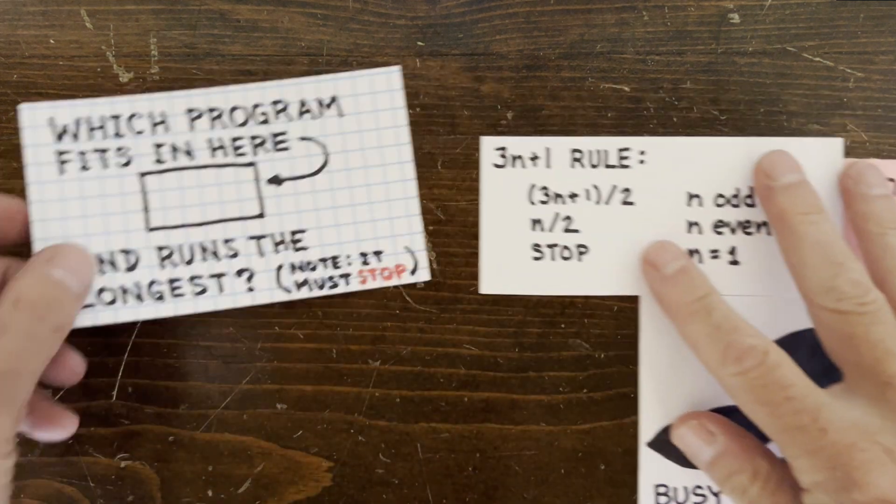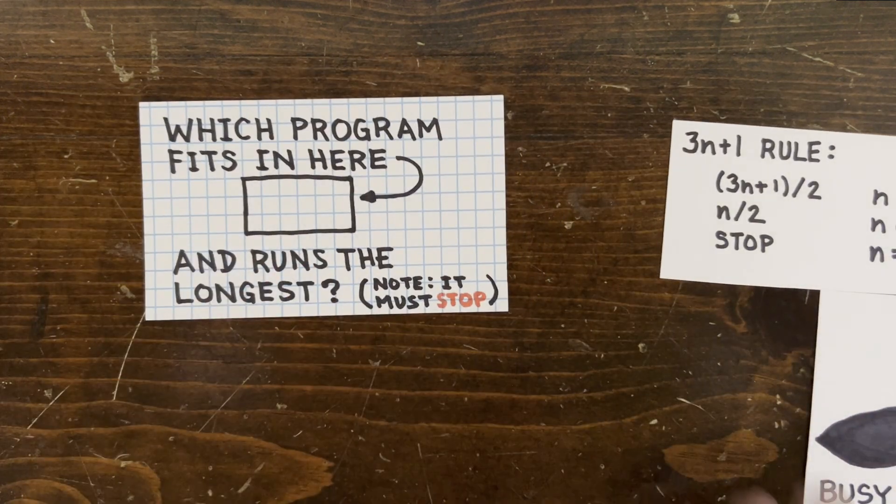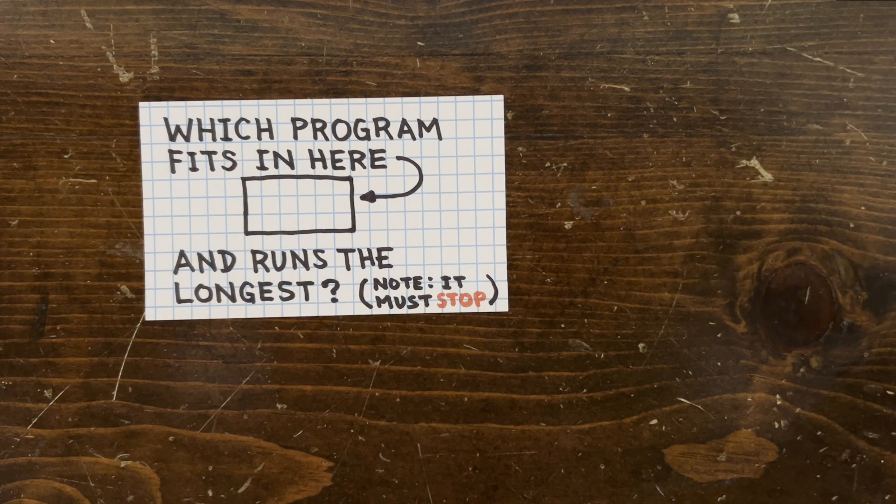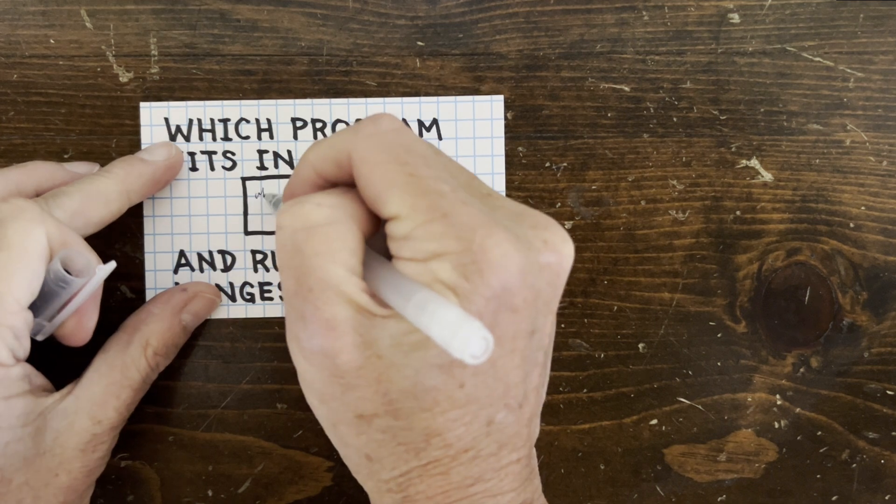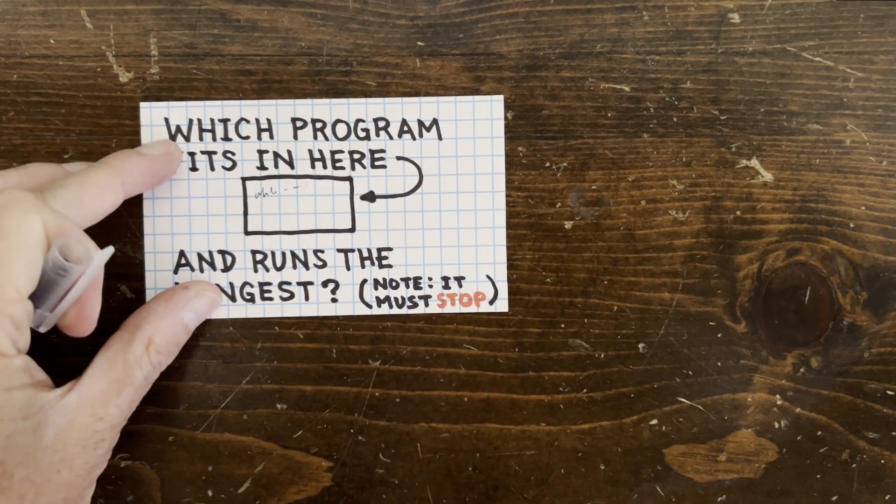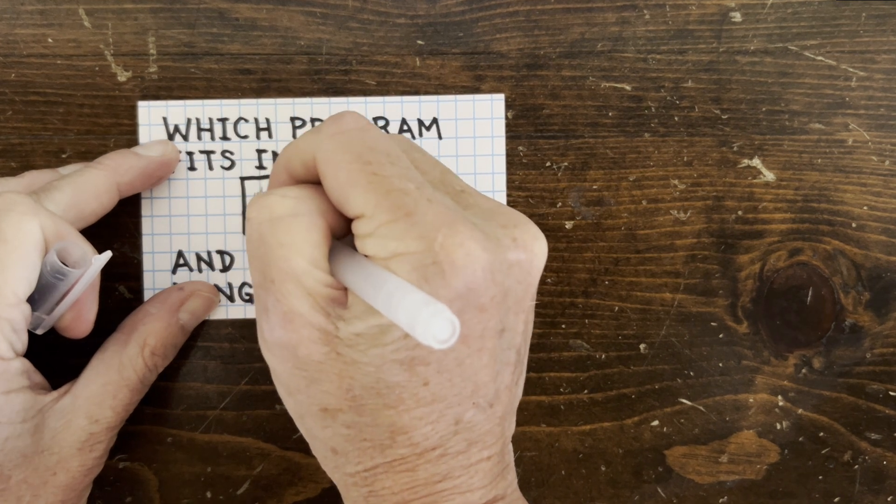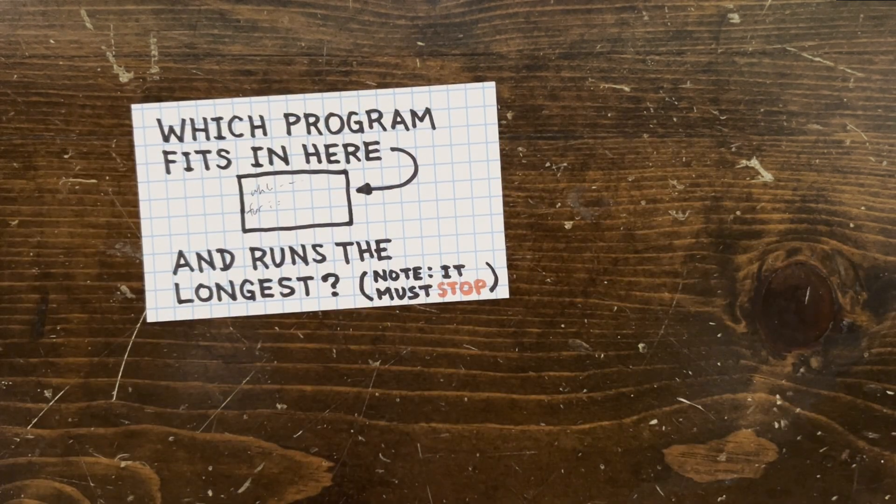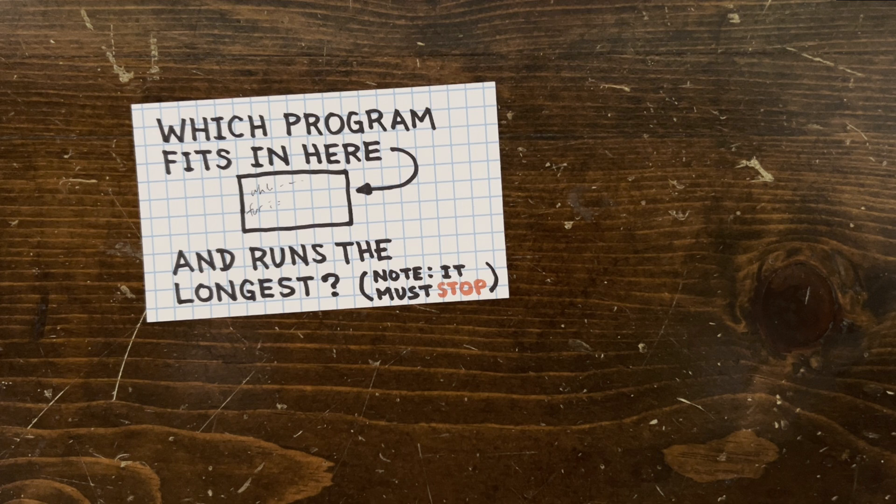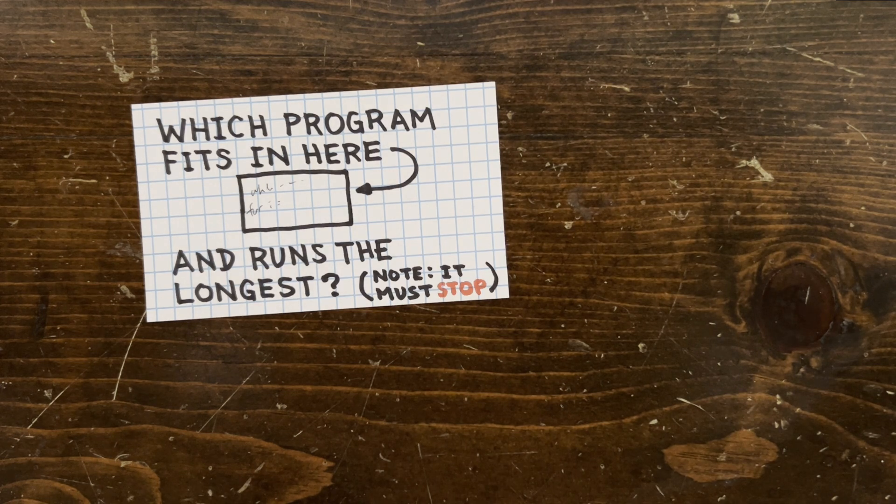Suppose I ask you to write a very short computer program. It has to fit in this space, that runs as long as possible. Maybe you write while false loop. But I left out one condition, the program has to eventually stop. So maybe you write for i equals 1 to 10,000 print i. Now we're going to start arguing about which font sizes and programming languages are allowed.